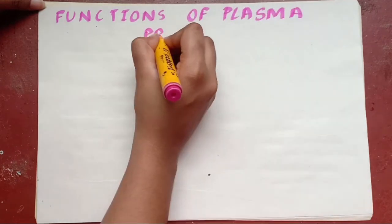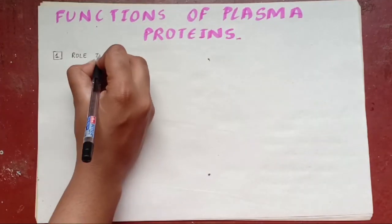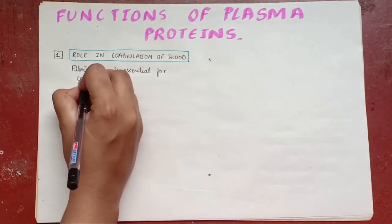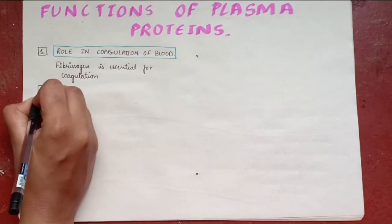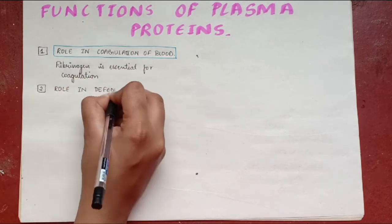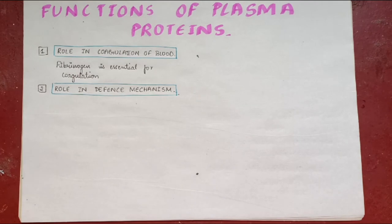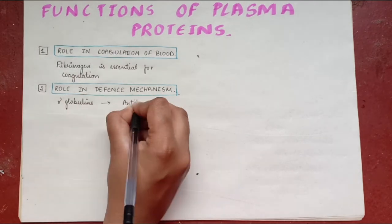Functions of plasma proteins. First one, role in coagulation of blood. Fibrinogen is essential for the coagulation of blood. Role in defense mechanism of the body. The gamma globulins play an important role in defense mechanism of the body by acting as antibodies.